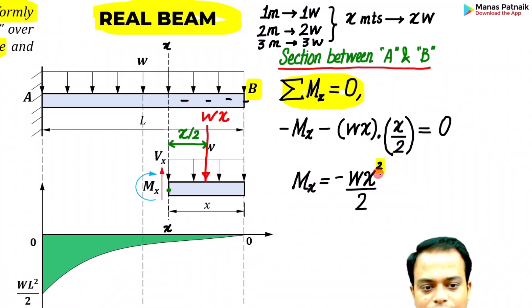If we keep on changing the value of x, the bending moment will give you values in this fashion. For x equals 0, this is the value. For x equals L, the value is going to be w times L squared by 2. Since it is negative, it has been drawn below the origin, below the x-axis.